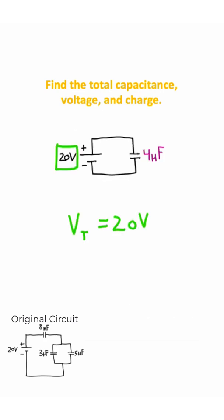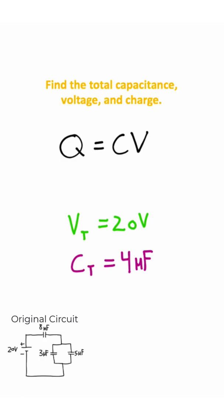So you get this, and now you have the total voltage and the total capacitance on your circuit. We can calculate the charge using this equation, which is charge equals capacitance times voltage.